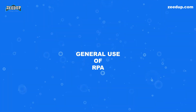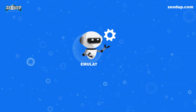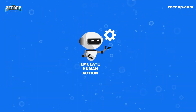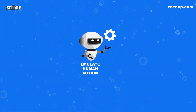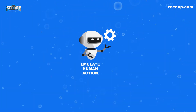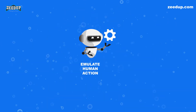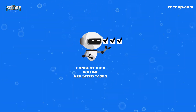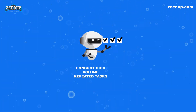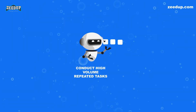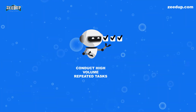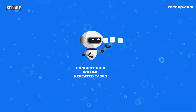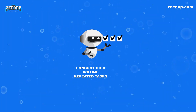General uses of RPA. 1. Emulates human action: emulates human execution of repetitive processes using various applications and systems. 2. Conduct high-volume repeated tasks: Robotic Process Automation can easily simulate re-keying of data from one system to another. It performs tasks like data entry, copying, and pasting.